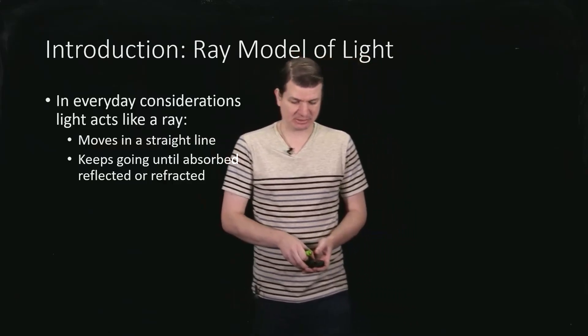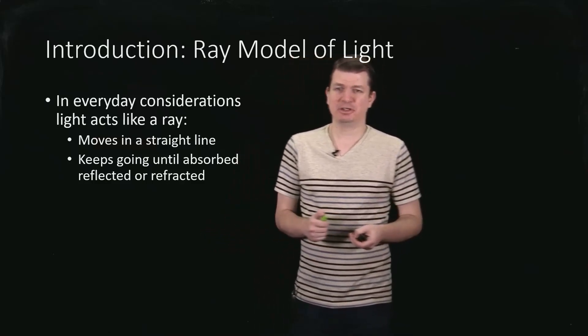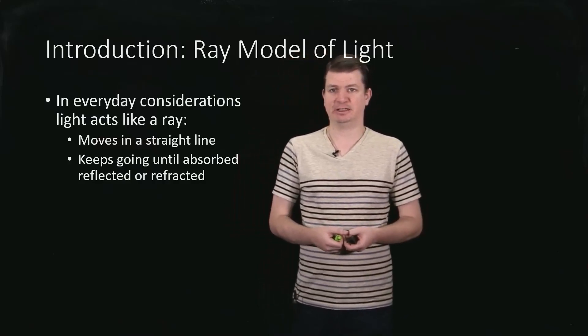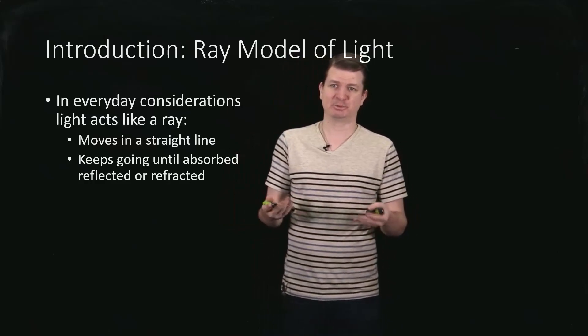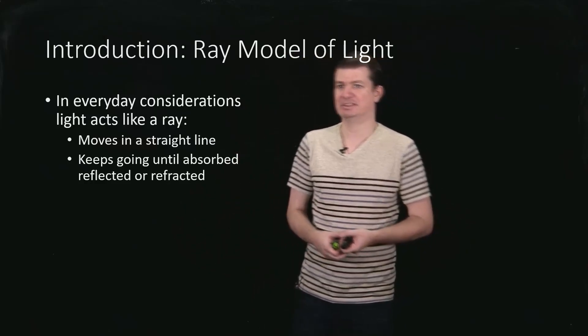What the ray model of light says is that in everyday considerations we're never concerned about the wave-like properties of light. So we don't care about oscillating electric and magnetic fields, unless we're particularly trying to build an antenna, a radio receiver, something like that.